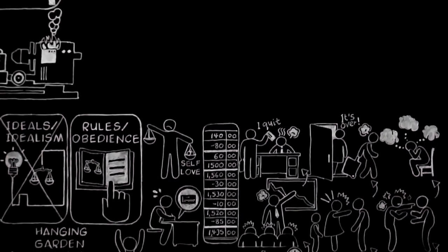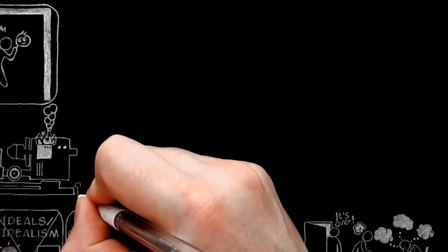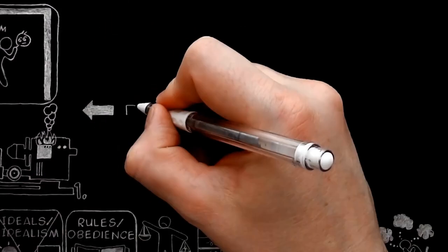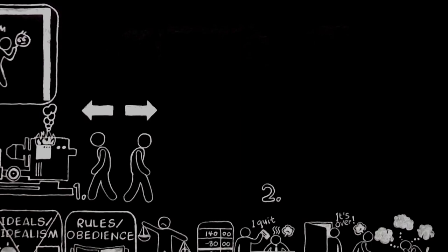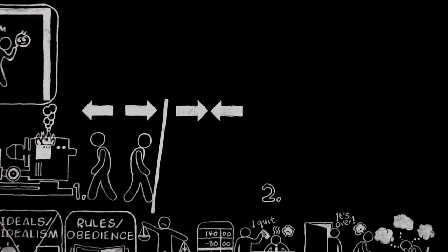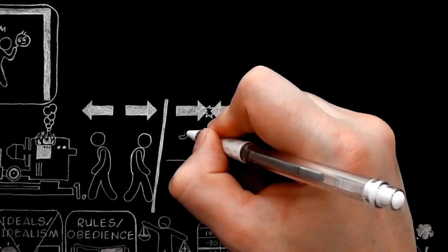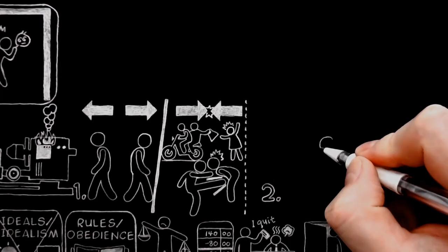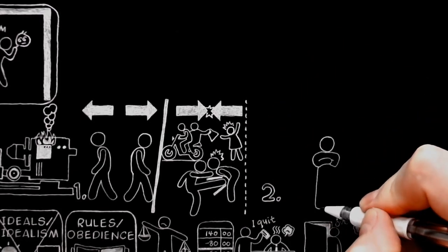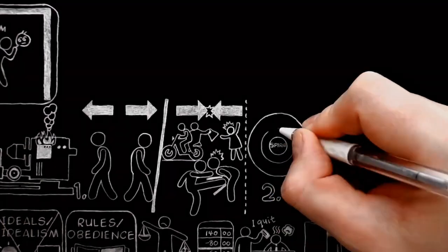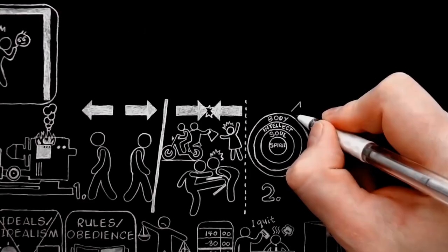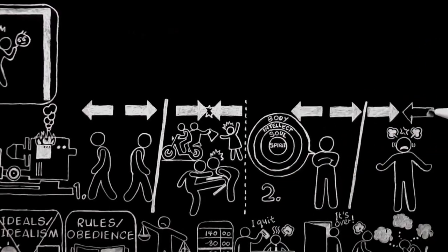Now, let us go a step further. There are two ways in which the human machine goes wrong. One is when human individuals drift apart from one another, or else collide with one another and do one another damage by cheating or bullying. The other is when things go wrong inside the individual, when the different parts of him, his different faculties and desires and so on, either drift apart or interfere with one another.